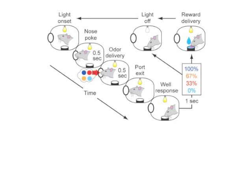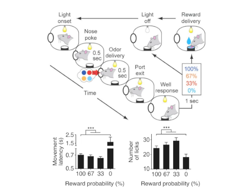We trained rats in a simple odor-cued response task, in which four different odor cues were associated with four different probabilities of reward: 100, 67, 33, and 0%, respectively. During recording, rats responded more quickly and licked more as reward became increasingly uncertain. This result is consistent with the higher salience of these trial types.